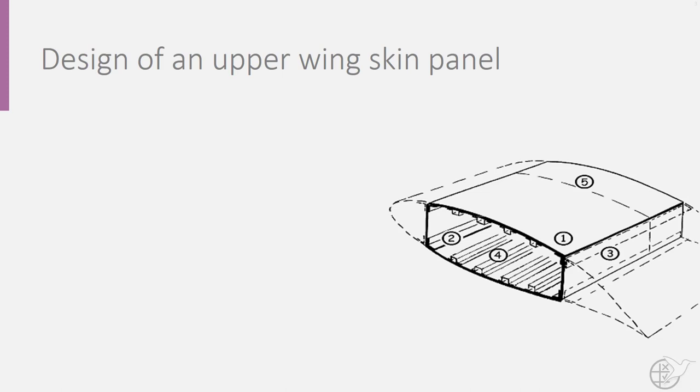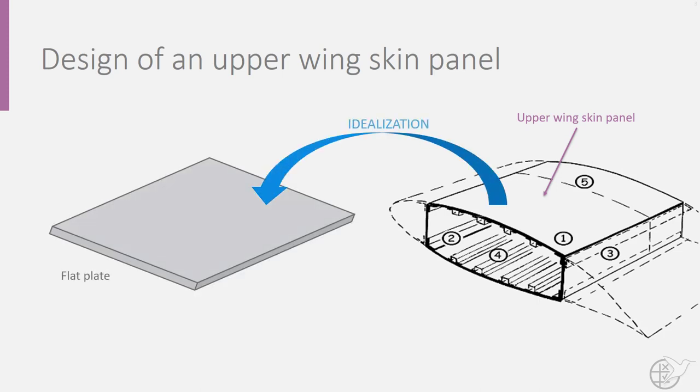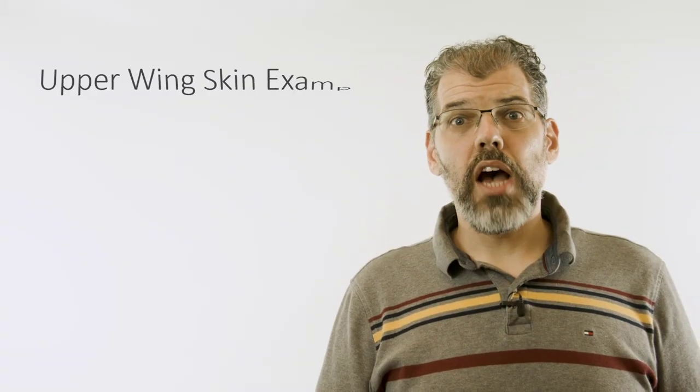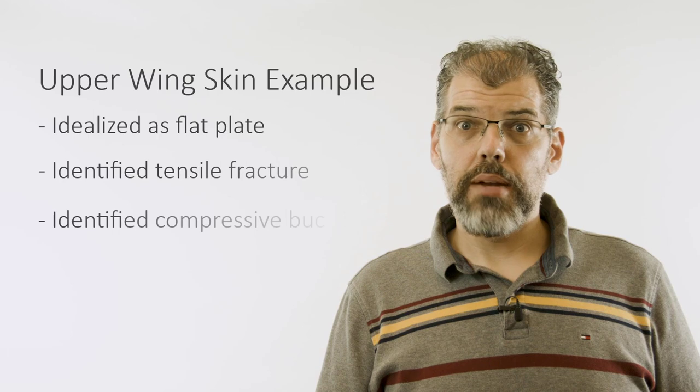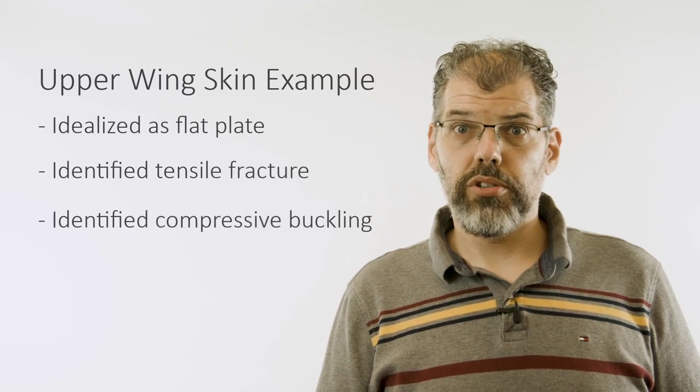For the purposes of selecting a material, we can idealize the wing skin as a far more simple yet representative structure, a flat plate. So we now have idealized our structure as a flat plate and identified fracture and buckling as two limits to its structural capability.